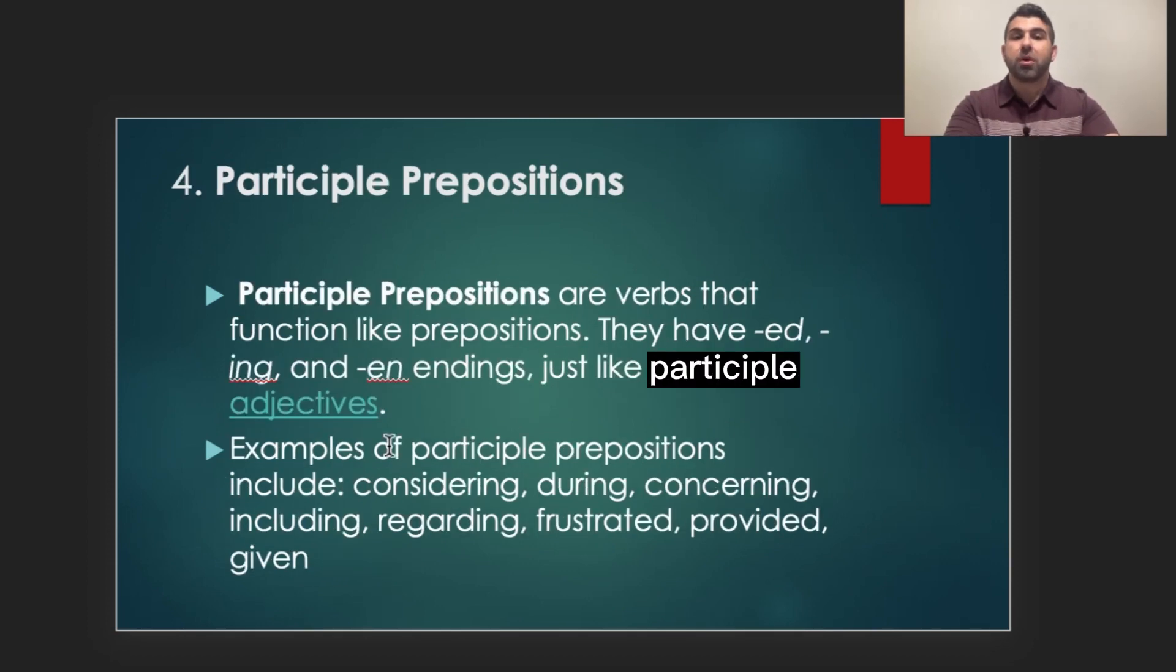The fourth type of preposition are participle prepositions. Participle prepositions, if you know what a participle is, will help. So, participle prepositions are verbs that function like prepositions. They have ed endings, ing, or en endings, and they are similar to participle adjectives, which if anybody wants to learn about that, I can talk about in another video. So, examples of participle prepositions include considering, during, concerning, including, regarding, frustrated, provided, given. Now, bear in mind that it's really important to understand what a preposition is, what a preposition is, and what it is used for, to understand how to use these as a preposition.